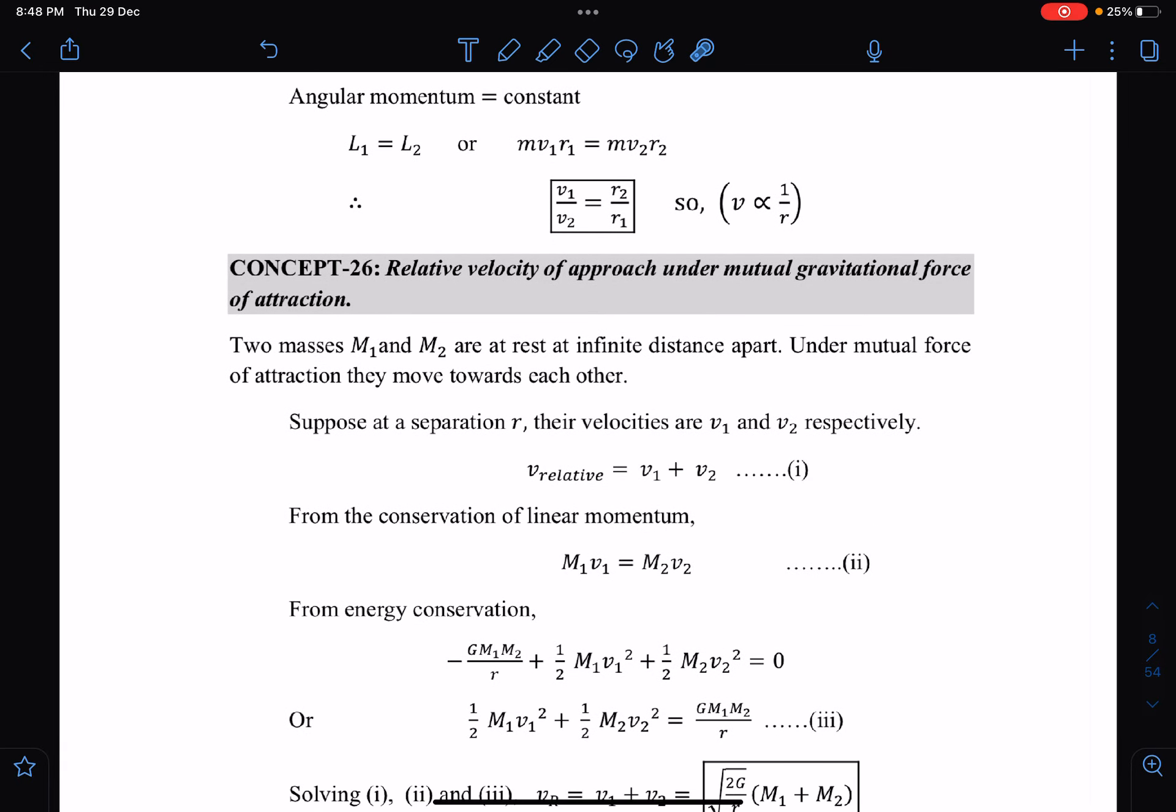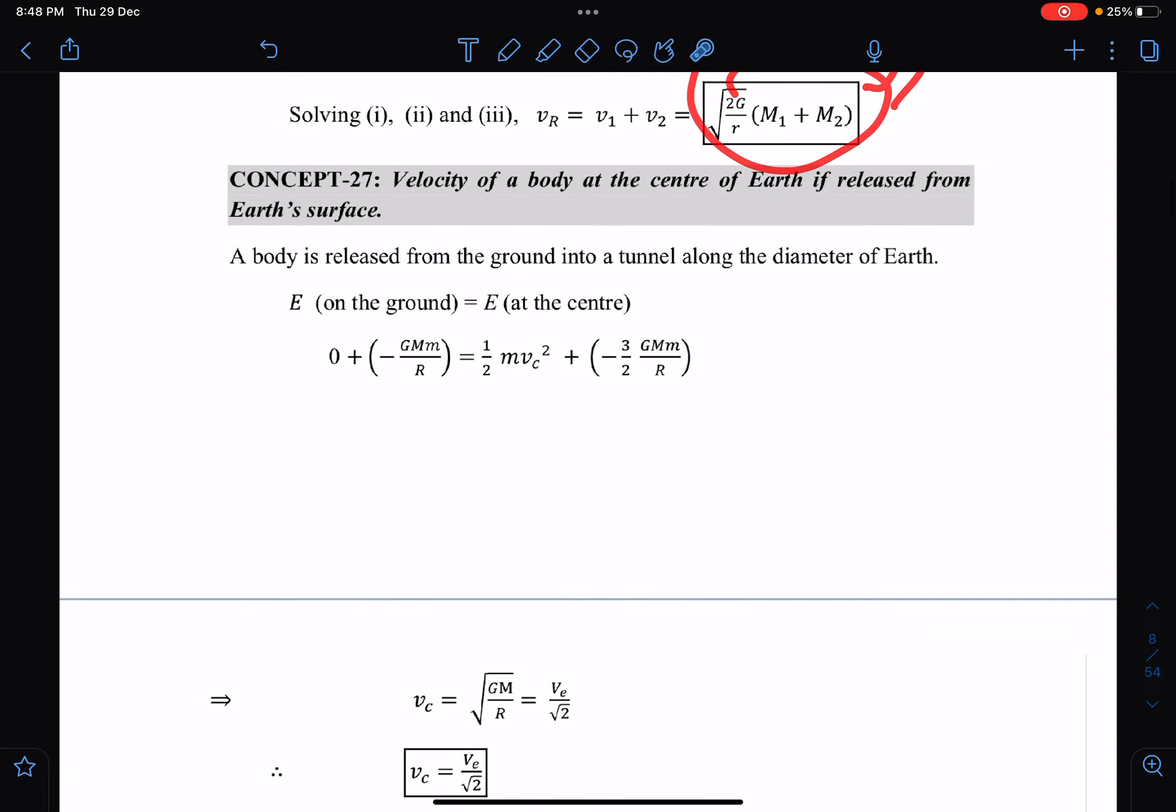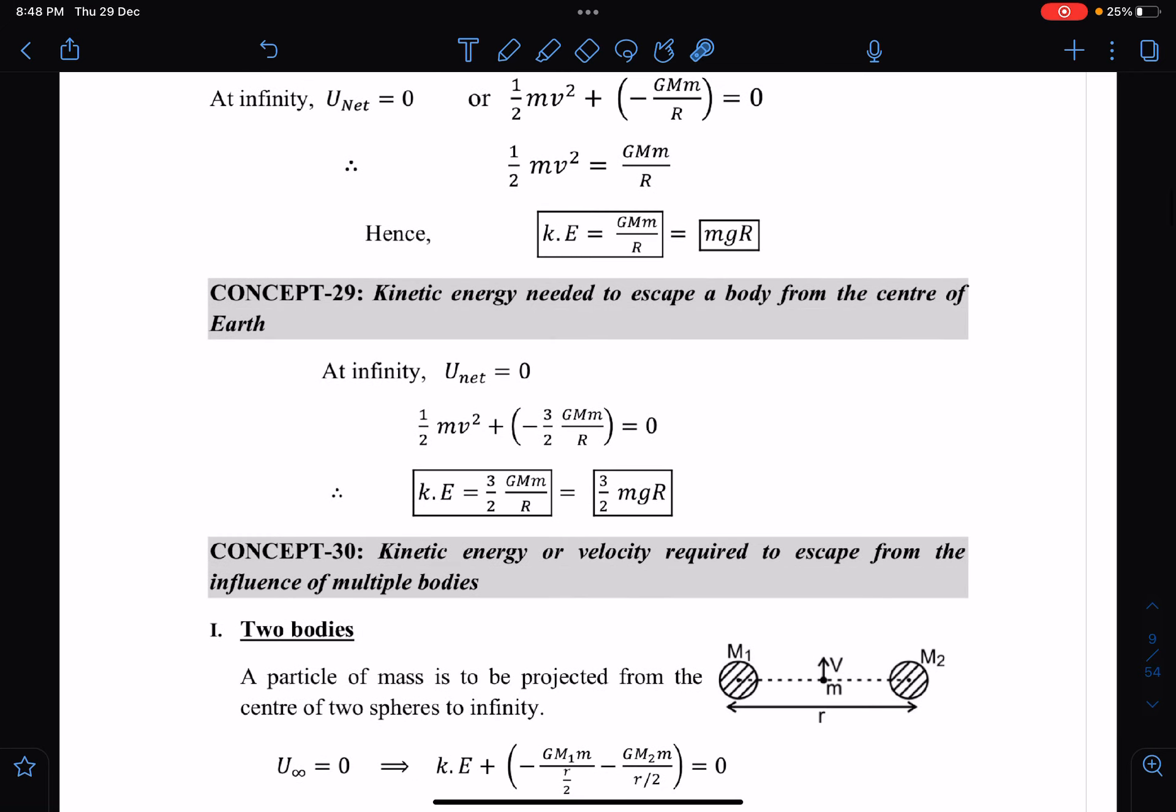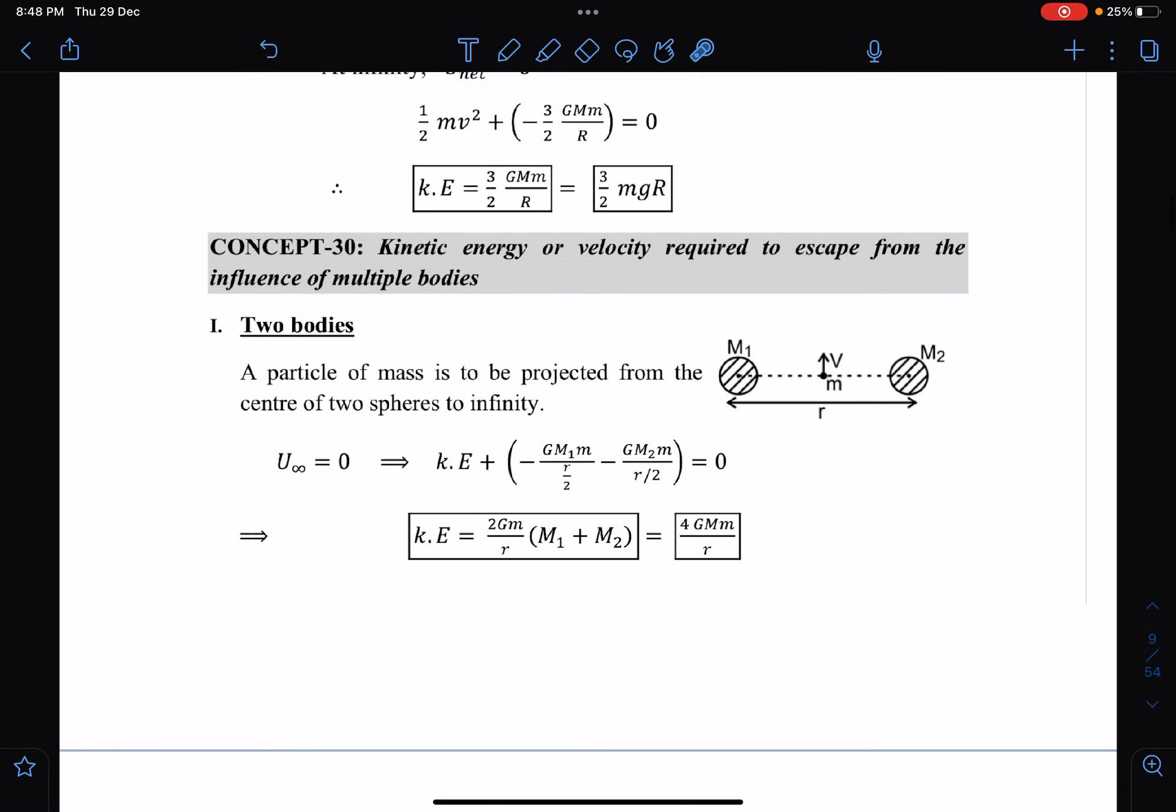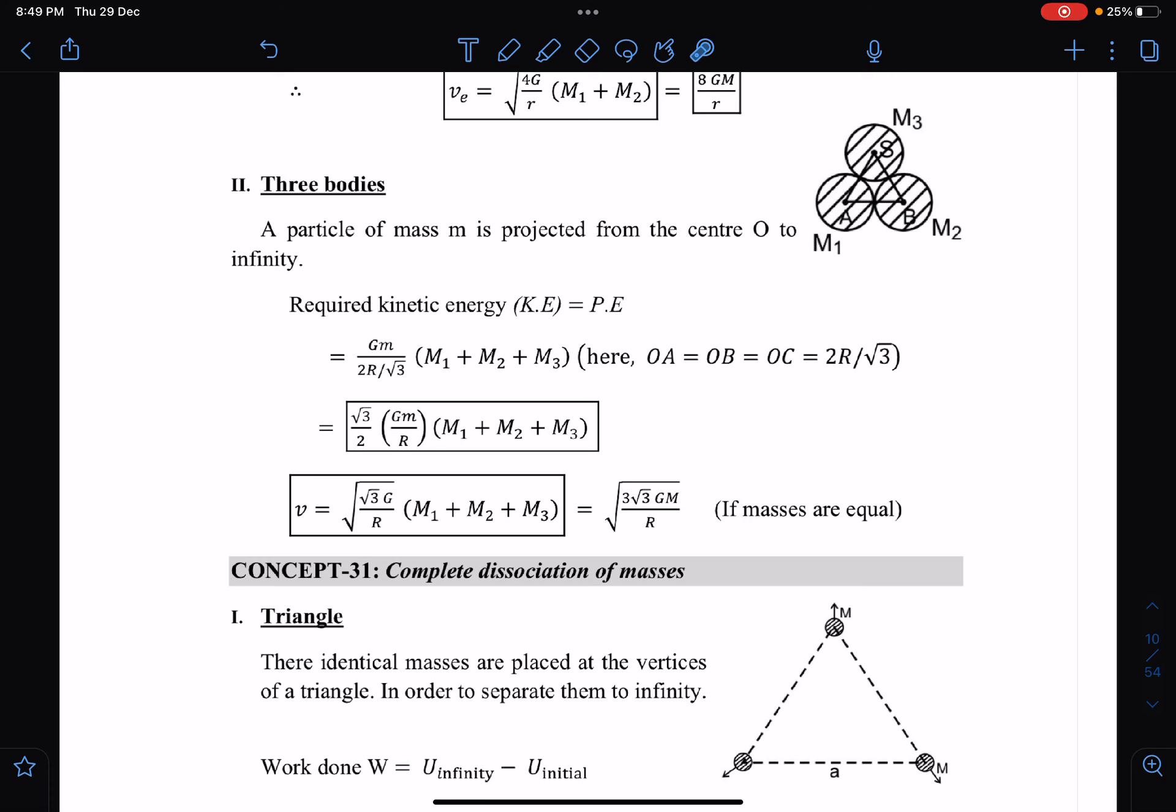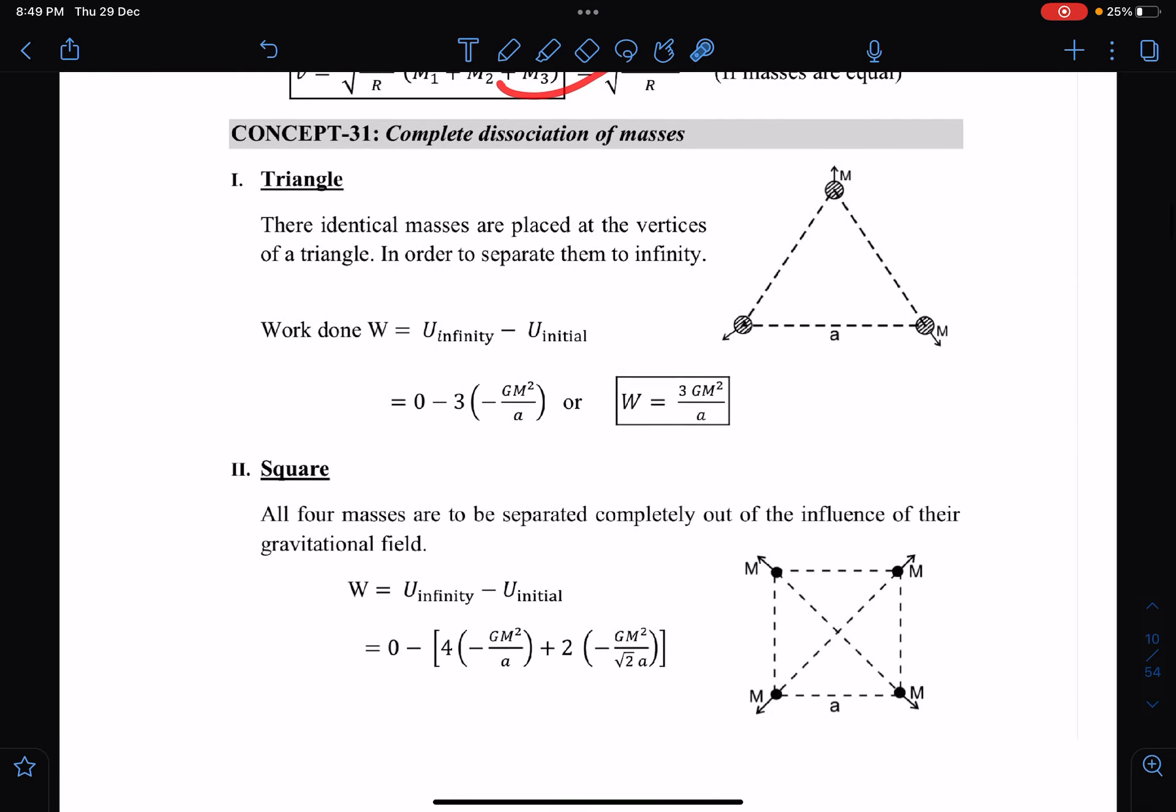If you go through all these concepts, the entire chapter will be revised thoroughly. These results like relative velocity of approach under mutual gravitation—if you know these results, you will be able to solve questions instantly. Kinetic energy needed to escape a body under the influence of multiple bodies, general concept of escape velocity, three body escape velocity if masses were unequal or equal.